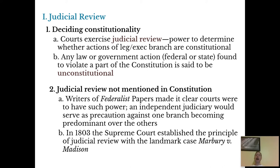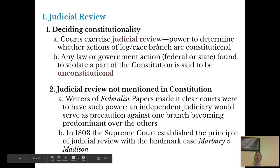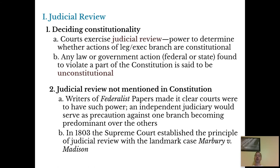The judicial branch's main power over the other two branches is the idea of judicial review — the power to determine whether something is constitutional or not. The judicial branch can review or judge whether or not something is okay. The interesting thing is that the words 'judicial review' are not mentioned in the constitution anywhere. However, the Federalist Papers made clear that of course that's what judges do — that's what the judicial branch does: they judge things. And in the 1803 case Marbury v. Madison, which we will look at when we get to the judicial branch in Chapter 8, the Supreme Court exercised its power of judicial review for the very first time.